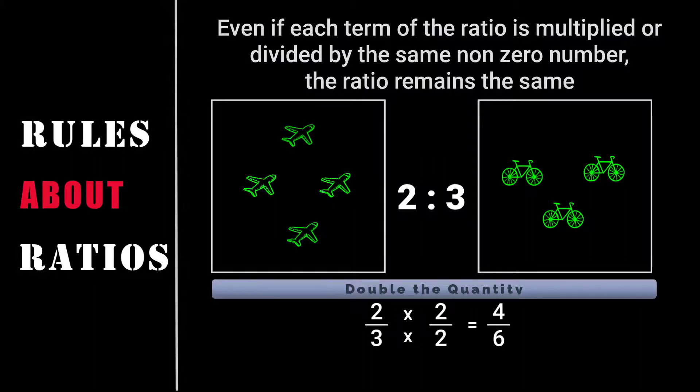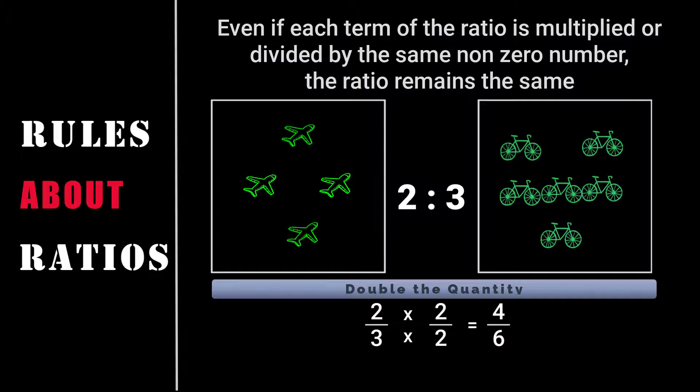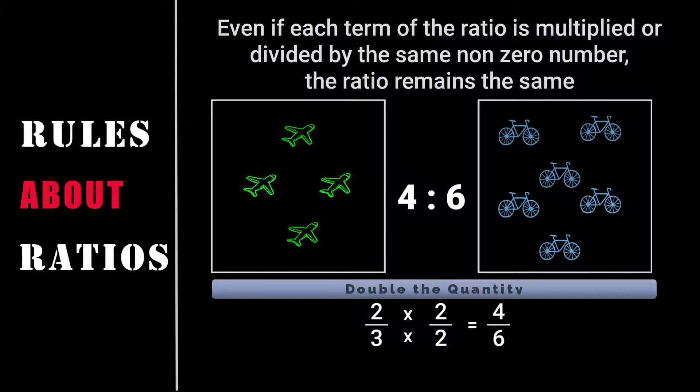It now becomes four aeroplanes and six cycles and their ratio is 4 is to 6. If we have to represent this ratio in the simplest form, then it again gets converted to 2 is to 3. That is, the common factor that divides both 4 and 6 is 2. So when you reduce it, we get 2 is to 3. So the ratio remains the same whether it's multiplied or divided by a non-zero number.